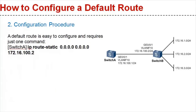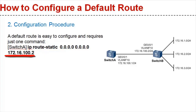A default route is easy to configure and requires just one command: ip route-static 0.0.0.0 0.0.0.0 172.16.100.2. In this command, both the destination network and mask are 0.0.0.0 and the next hop is 172.16.100.2.